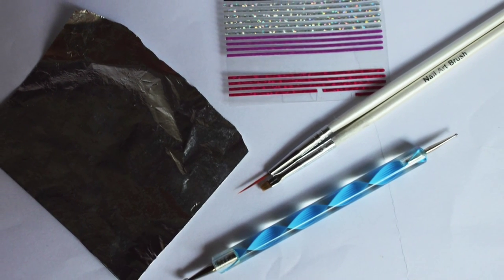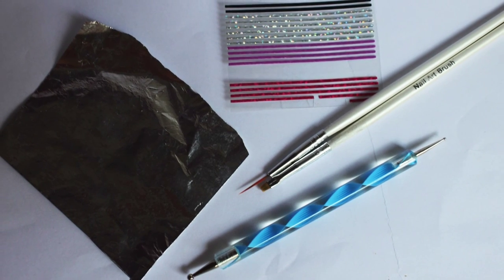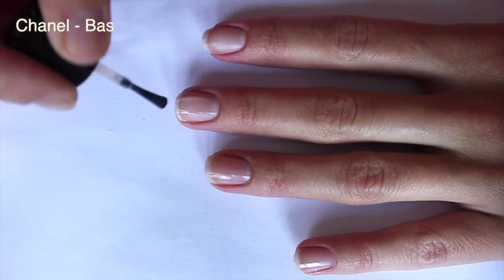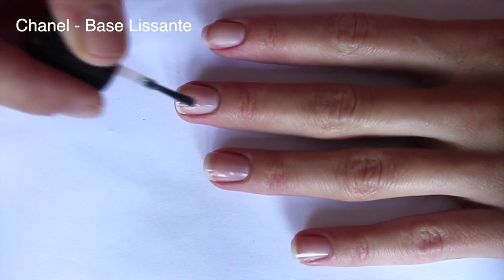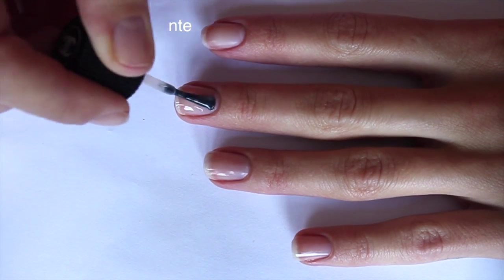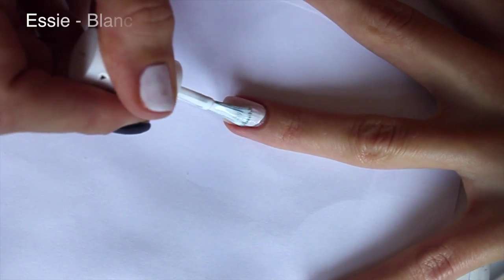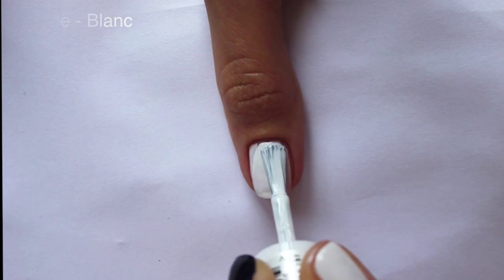with big and small tips, a piece of foil, and striping tape. Always prepare your nails with a base coat to protect them. Paint your thumb and ring fingers white.